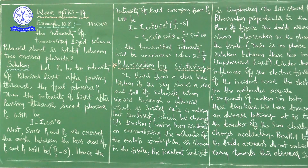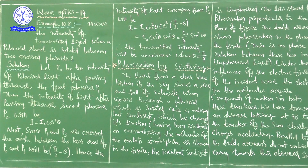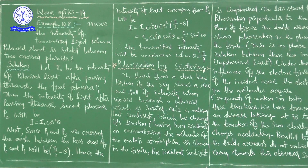Based on that formula, we are going to discuss one problem. Discuss the intensity of transmitted light when a polaroid sheet is rotated between two crossed polaroids.